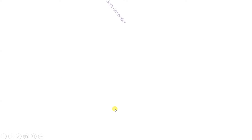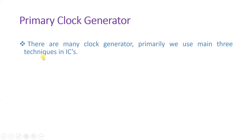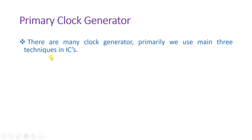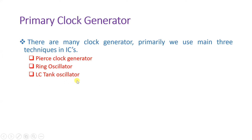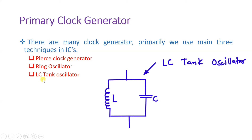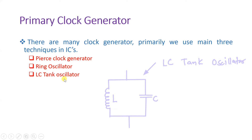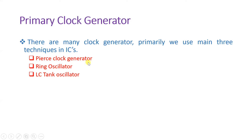Now let us look at clock generators. Primarily there are three techniques used to generate a clock: one is the pierce clock generator, second is the ring oscillator, and third is the LC tank oscillator circuit. The ring oscillator will be explained in a separate session, and the LC tank oscillator circuit, which has L and C in a parallel combination, you might have studied in basic electronics — so that is not going to be discussed here. We will see the pierce clock generator in detail.